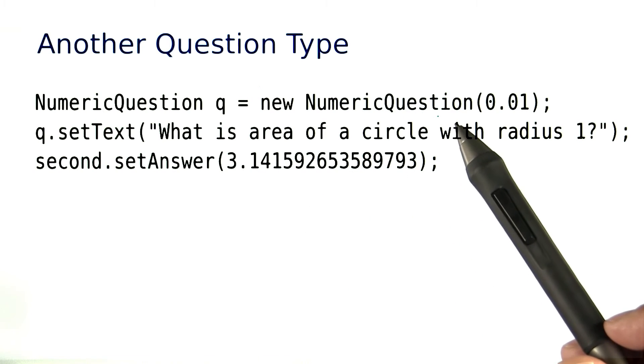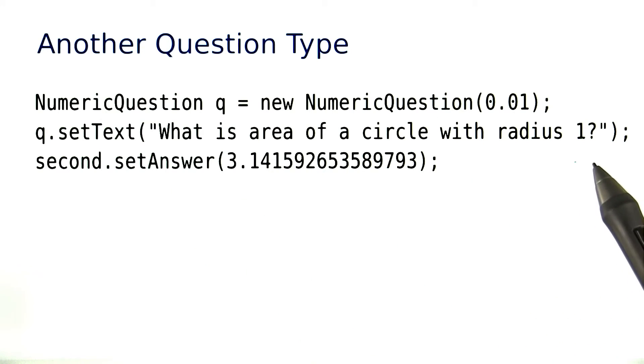A numeric question expects an answer from the user that's a number. For example, here we ask what is the area of a circle with radius 1, and the answer is of course pi.